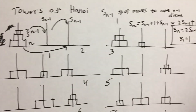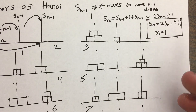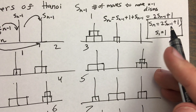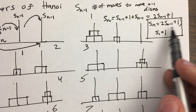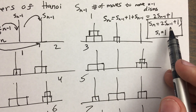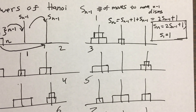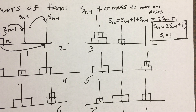In the next video, we're going to find a way to get a closed-form solution for this — basically S sub N not in terms of any previous terms, only in terms of N. So that if we want to find the fourth term, we can just plug in four and find out how many moves it would take to move four discs.